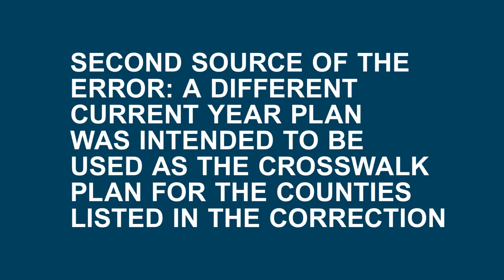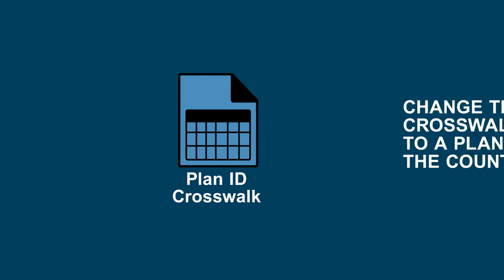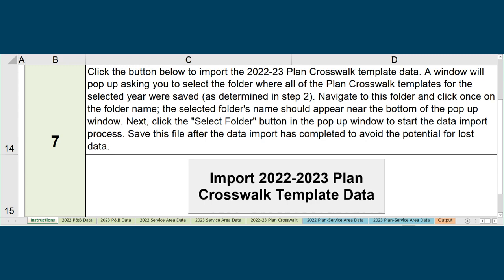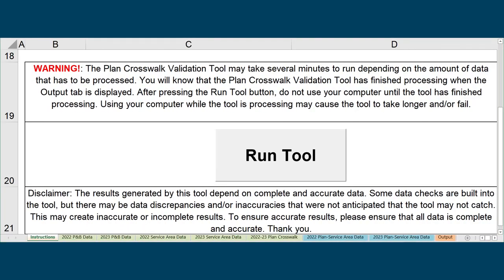The second potential source of the error is that a different plan for the current year was intended to be used as the crosswalk plan for the counties listed in the correction. If this is the case, open the PlanID Crosswalk template and change the current year's crosswalk plan to a plan that covers the counties listed and save the template. Then reimport the PlanID Crosswalk template into the PlanID Crosswalk tool and rerun the tool.